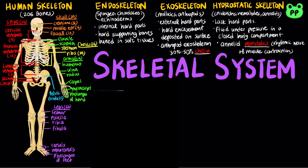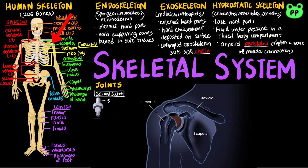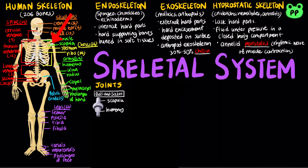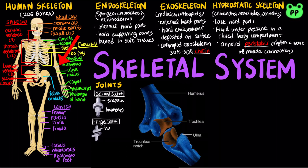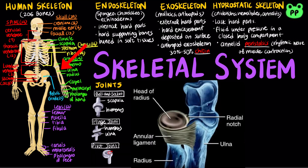Some bones are connected at joints by ligaments that allow freedom of movement. Ball and socket joints are found where the humerus contacts the shoulder girdle, enabling the arms to rotate and move in several planes. Hinge joints, such as between the humerus and the head of the ulna, restrict movement to a single plane. Pivot joints, which connect the ulna and radius, enable the forearm to rotate at the elbow.